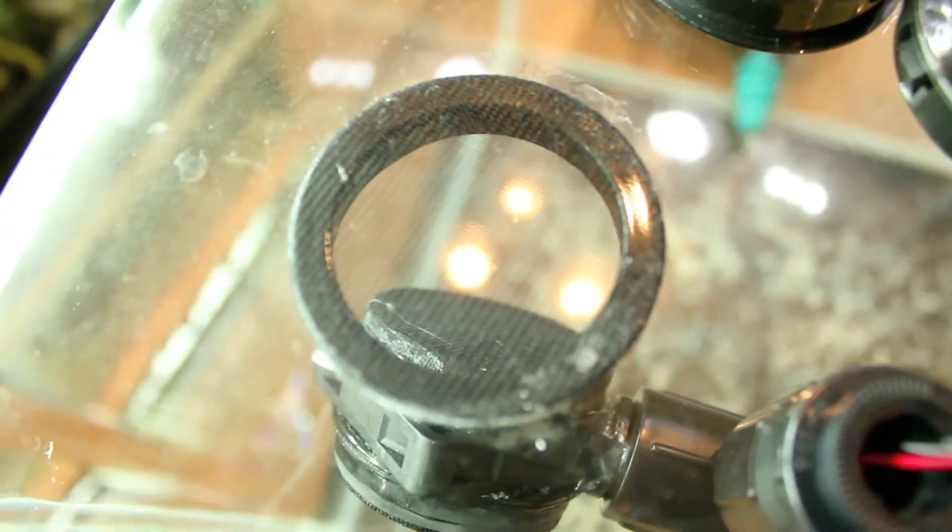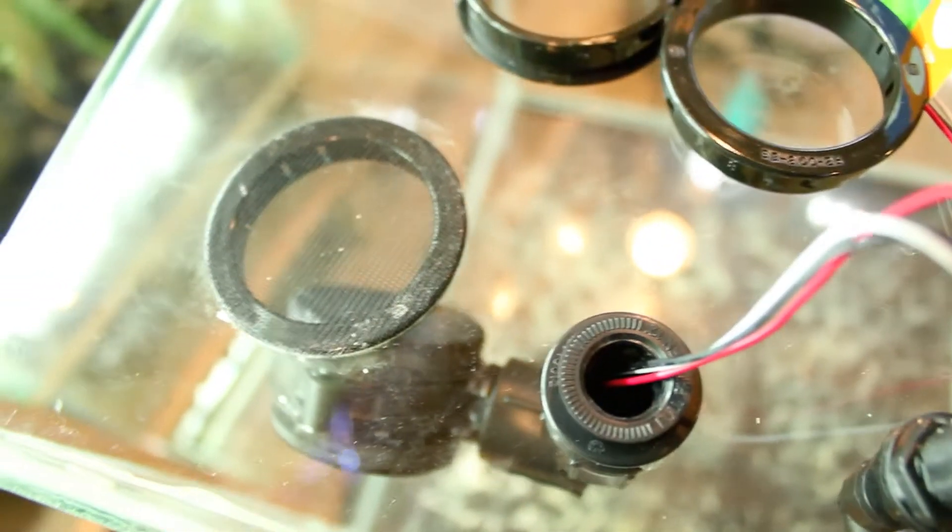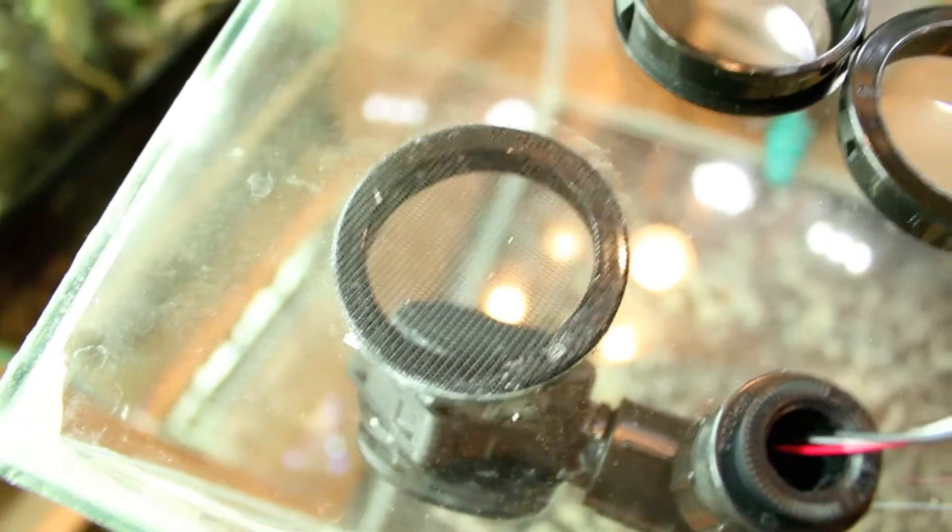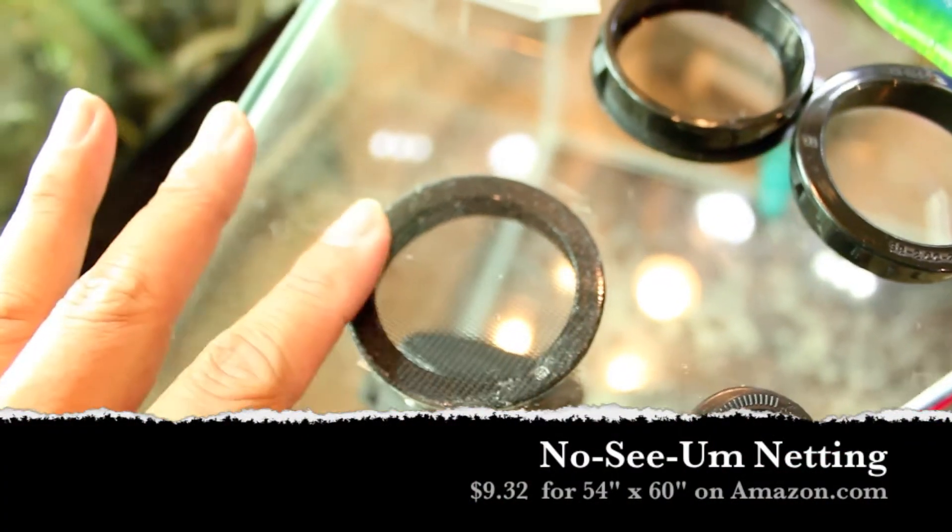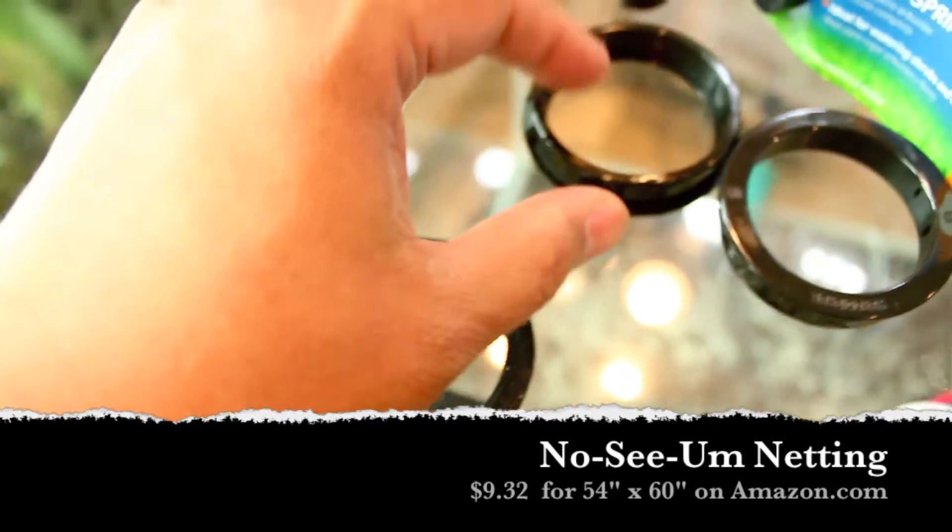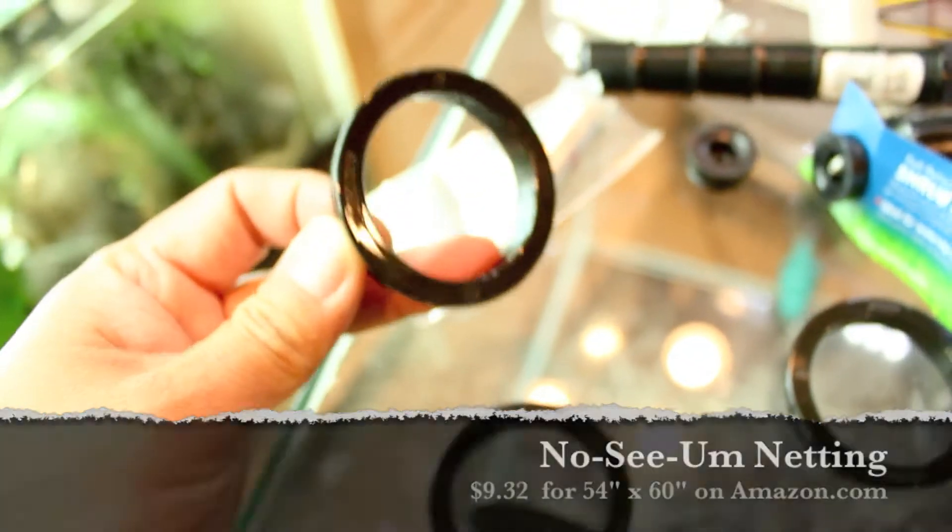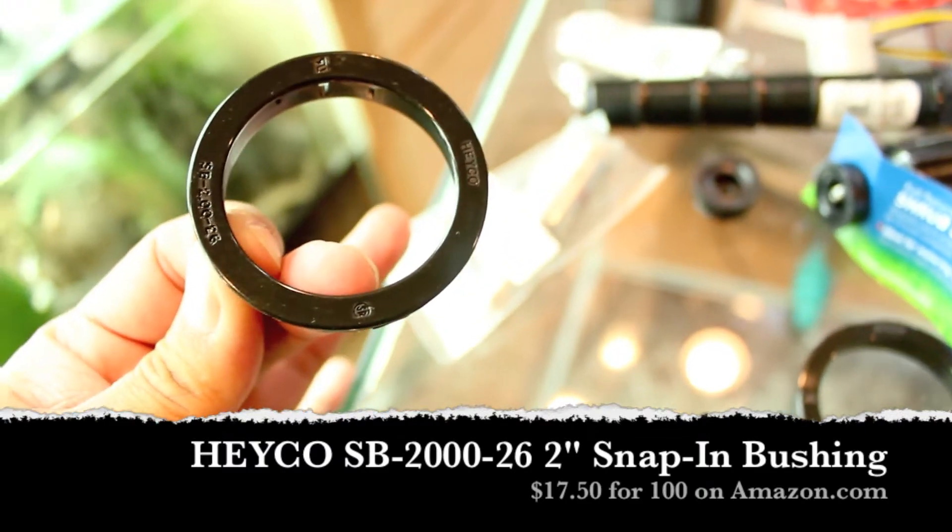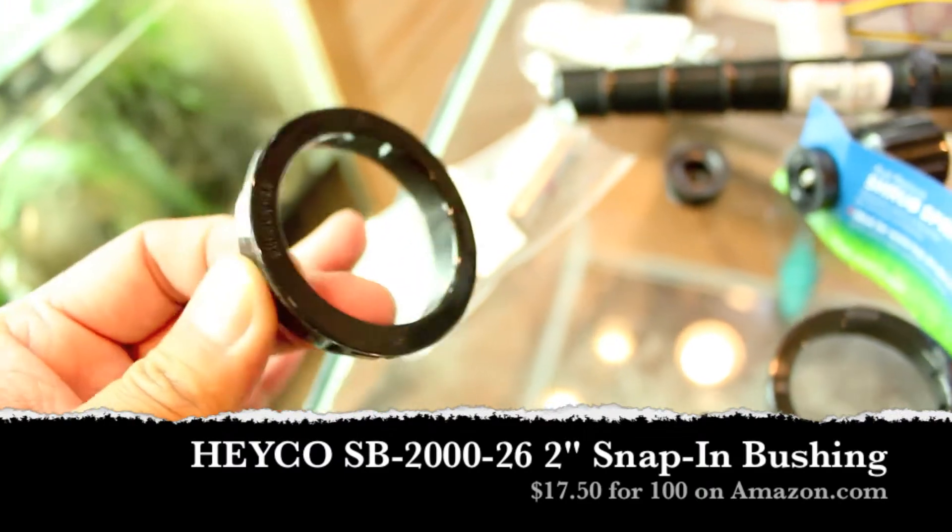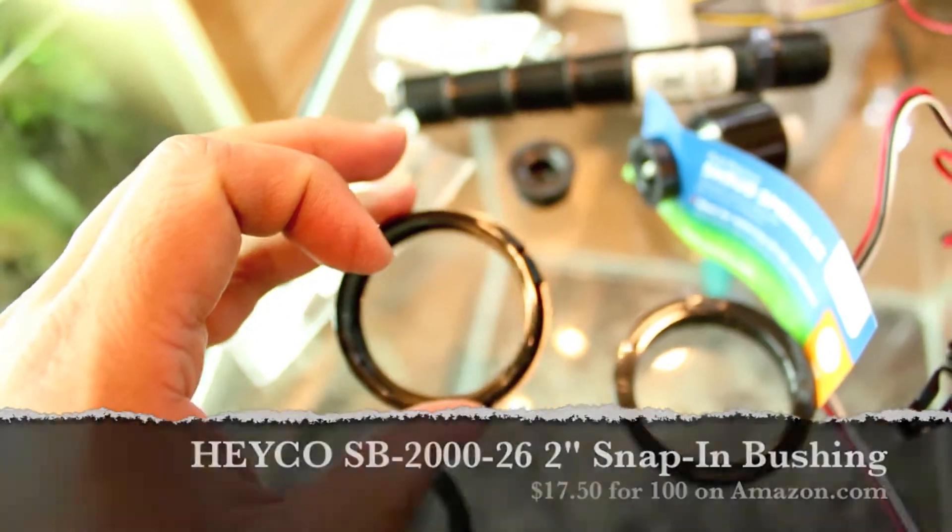As you may notice, I use a lot of 2-inch holes in my tanks for vents. These holes have no-see-um mosquito mesh on top of them and are pushed into place by these 2-inch snap-in bushings. I was thinking to myself, you know what, I should take these 2-inch snap-in bushings and just hook them onto a 50-millimeter PC fan.